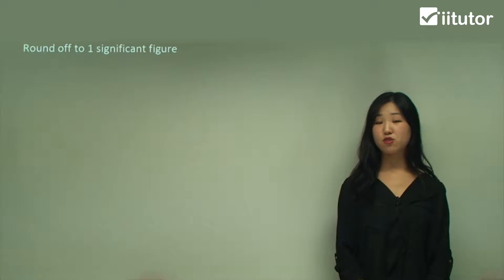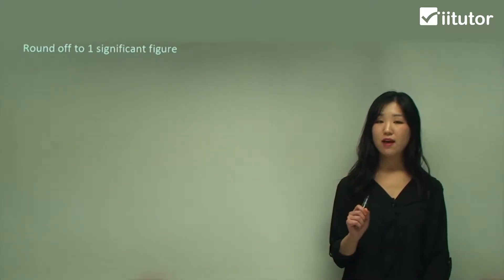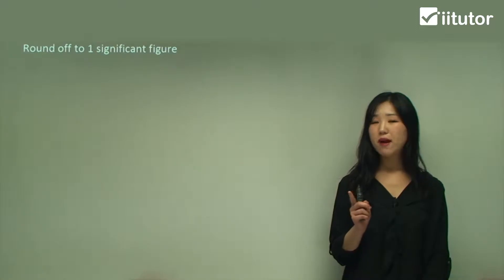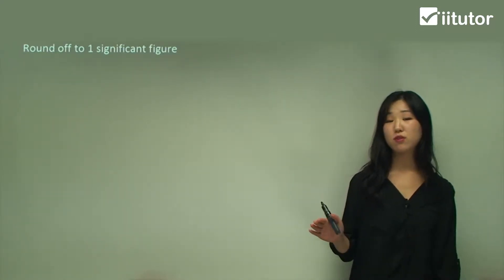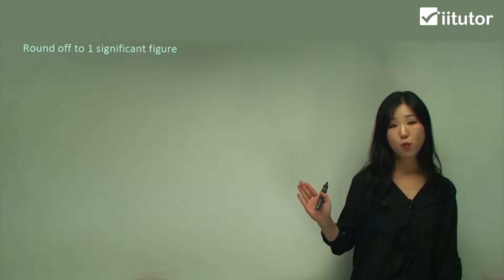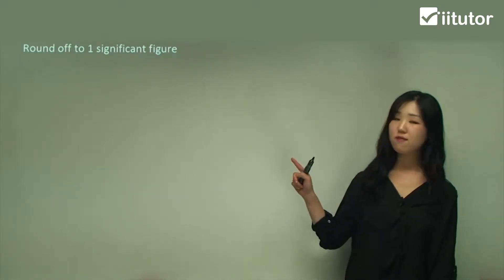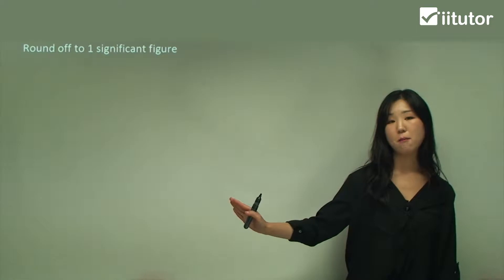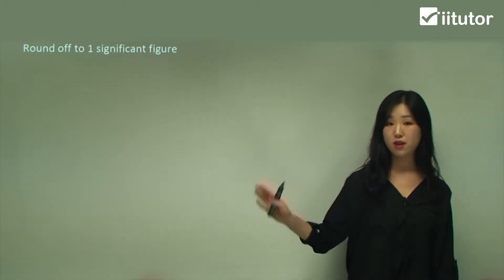We're going to be looking at significant figures and how to round when asked to round to significant figures. Now, significant figures is different to decimal places because decimal places we start from the decimal point onwards, to the right. But significant figures we start from the very first number, so we do include numbers that are before the decimal point.